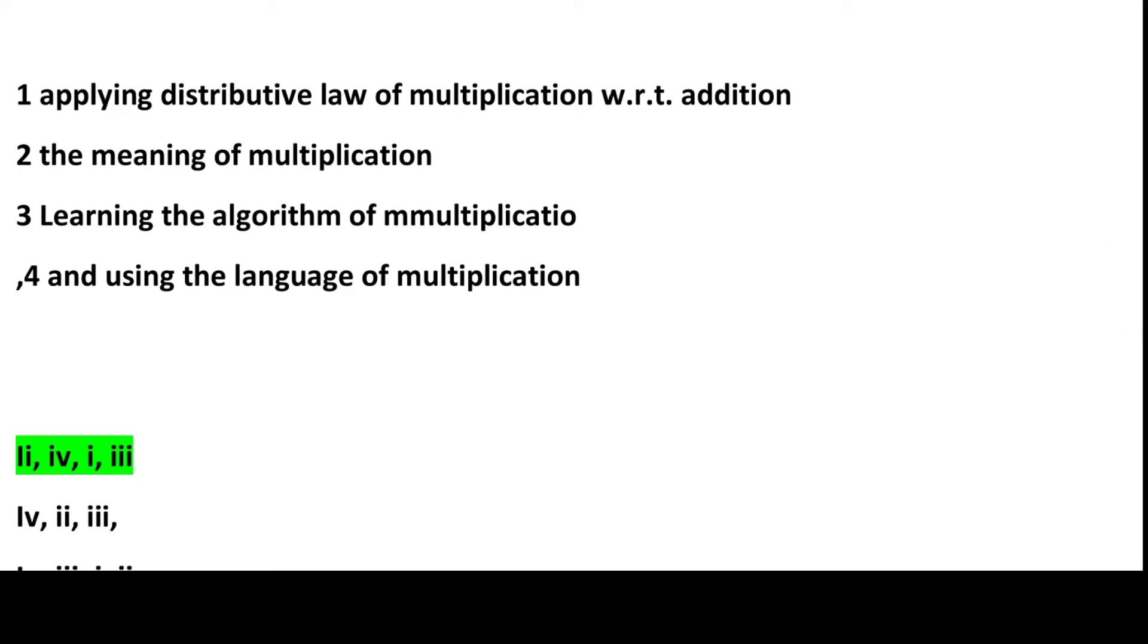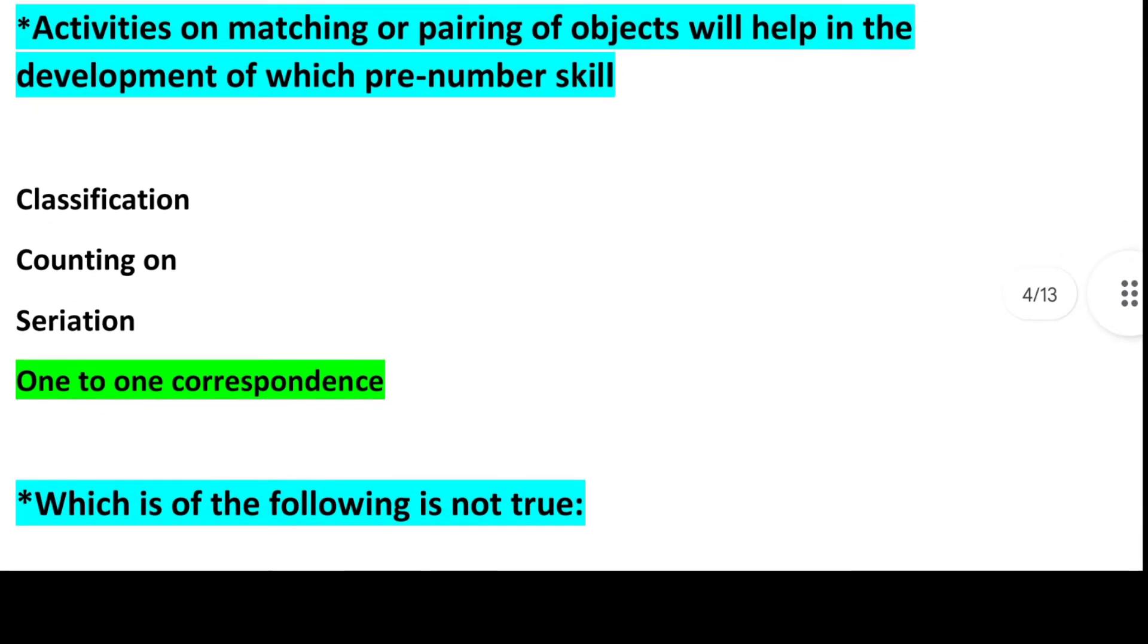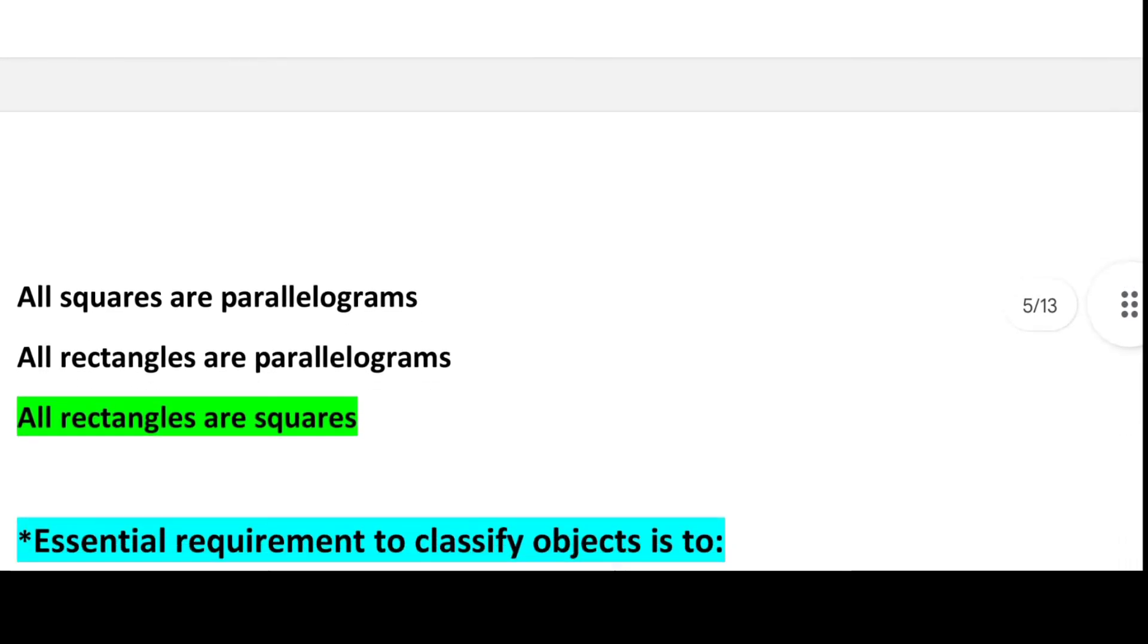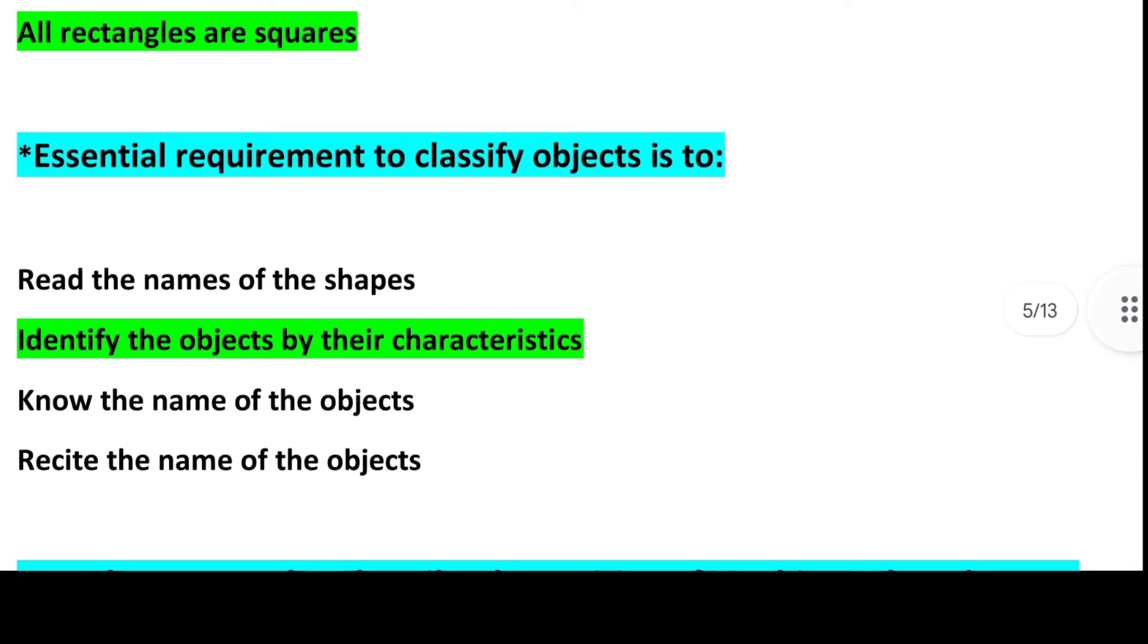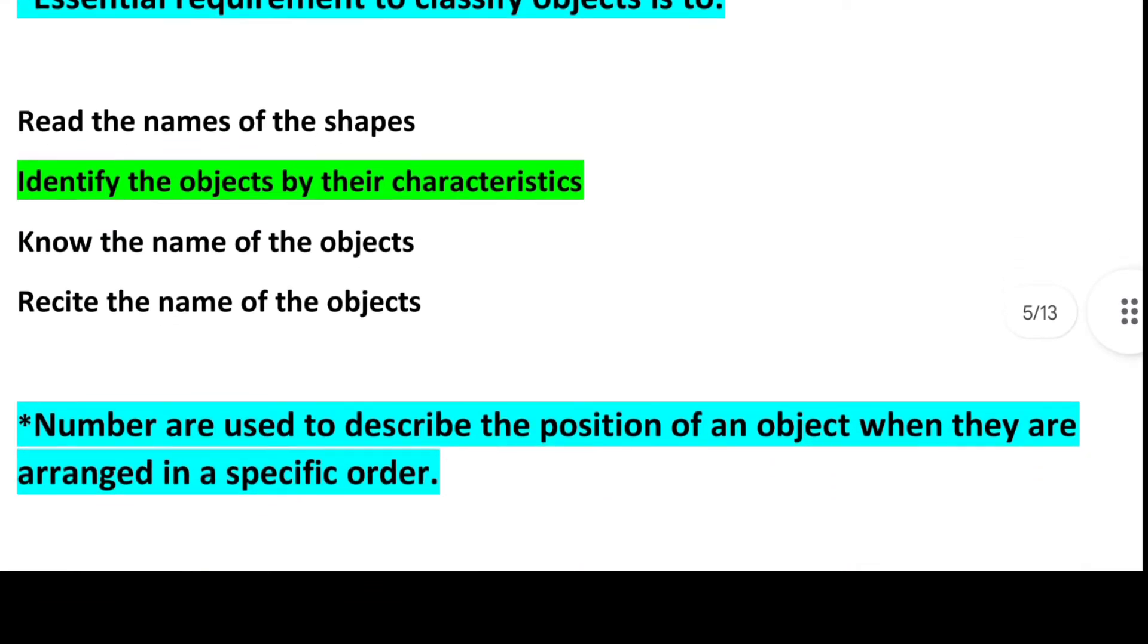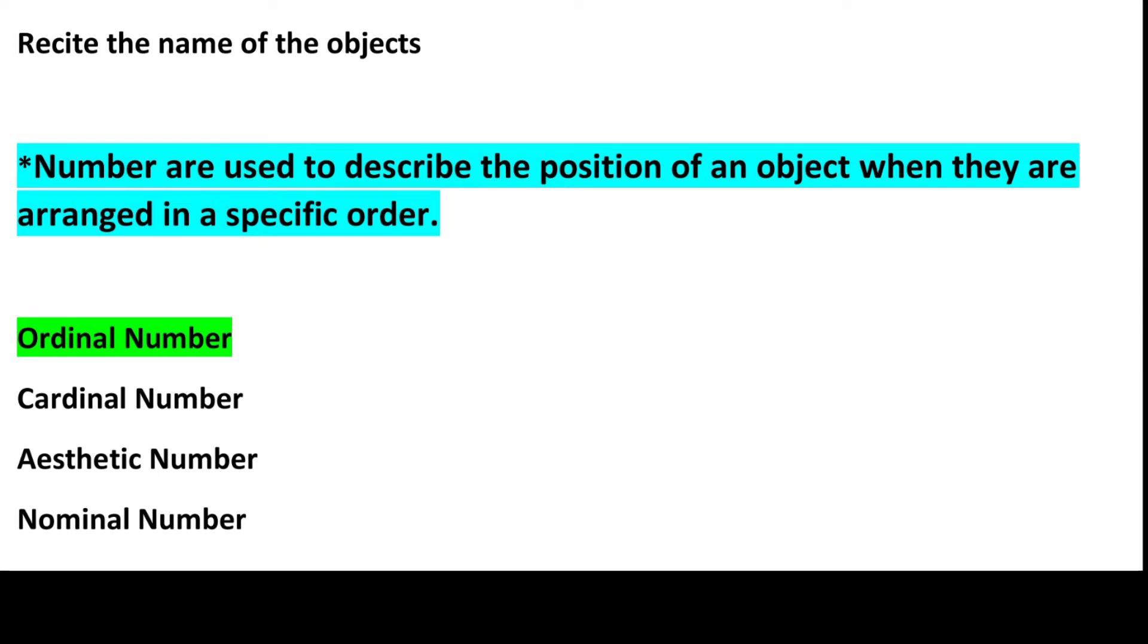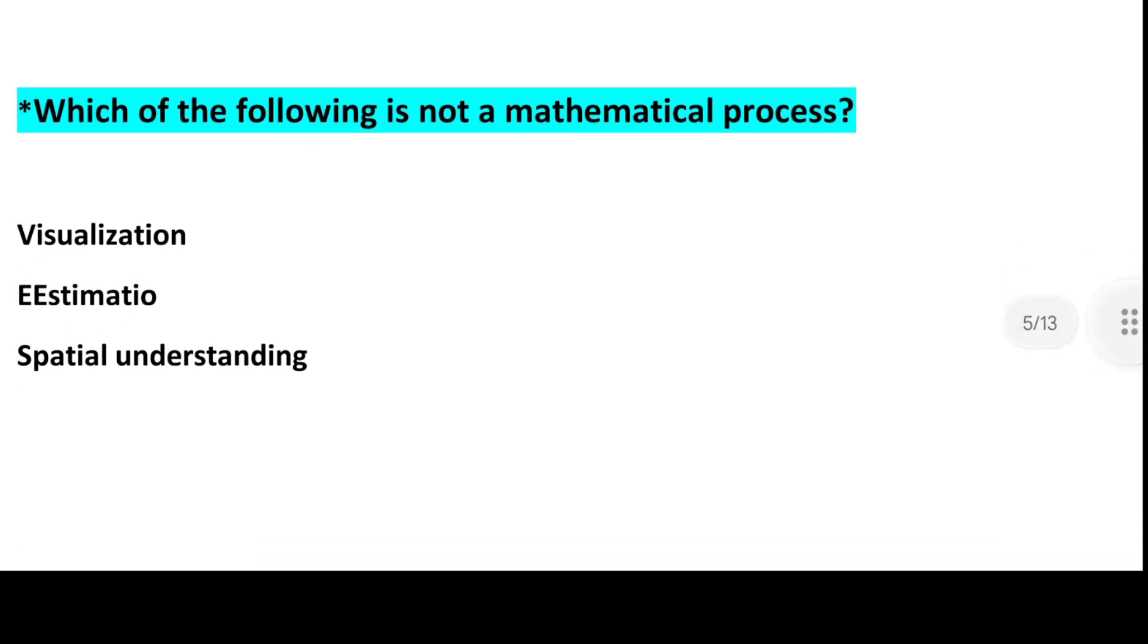Next question: Activities on matching or pairing of objects will help in the development of which pre-number skill? Answer is Option 4, One-to-one correspondence. Next question: Which of the following is not true? Answer is Option 4, All rectangles are squares. Next question: Essential requirement to classify objects is to. Answer is Option 2, Identify the objects by their characteristics.